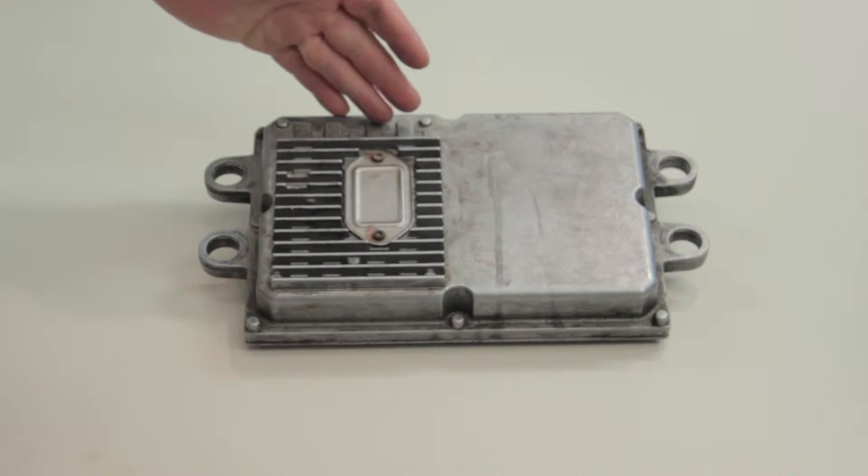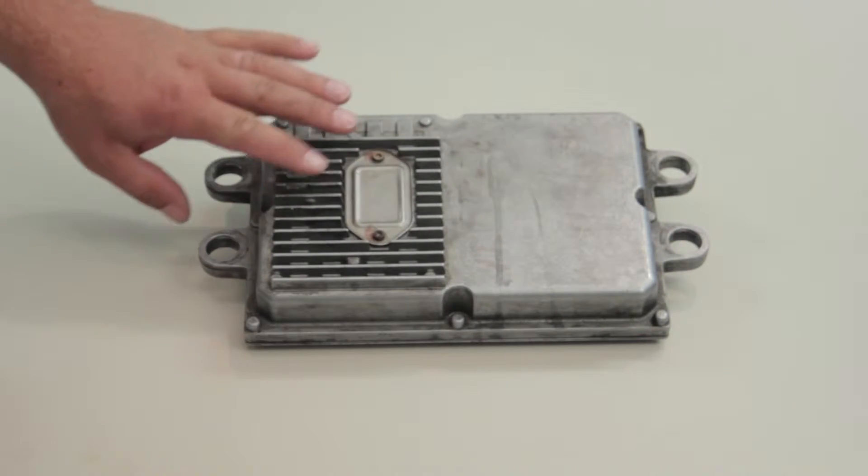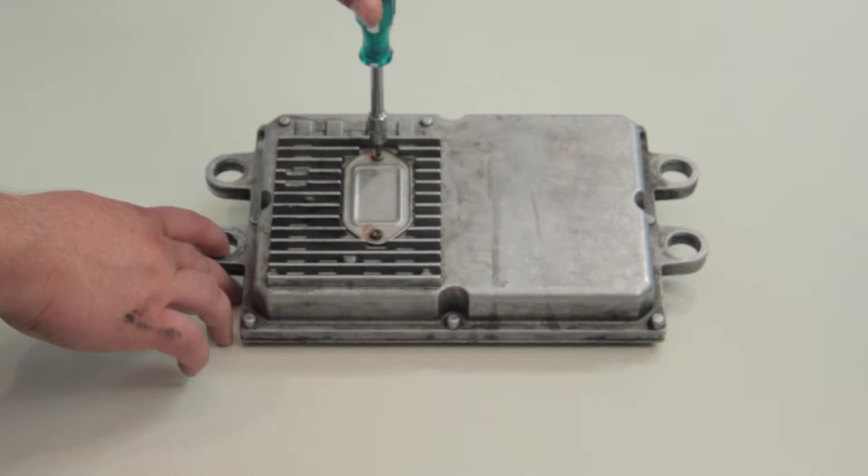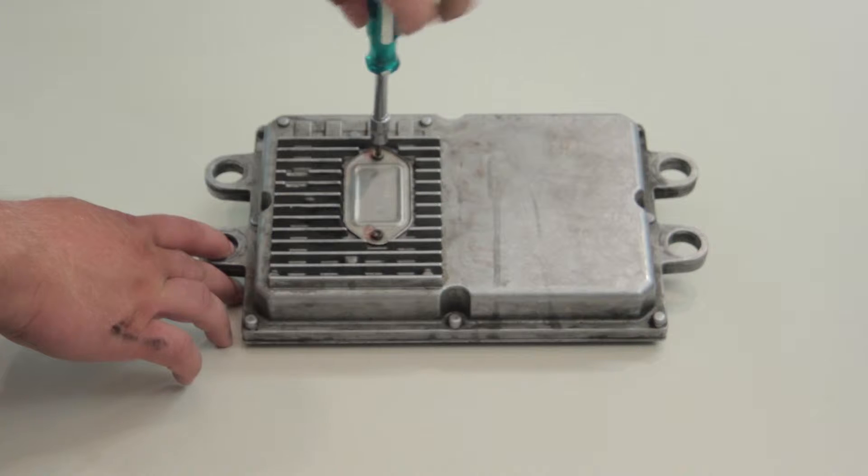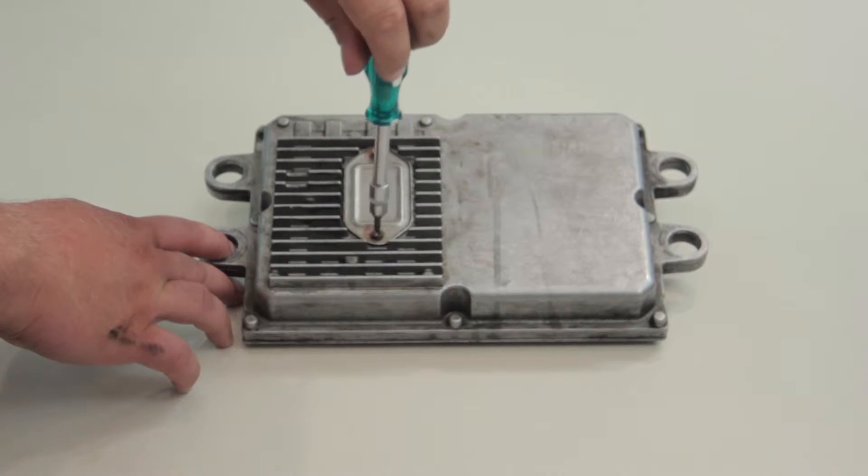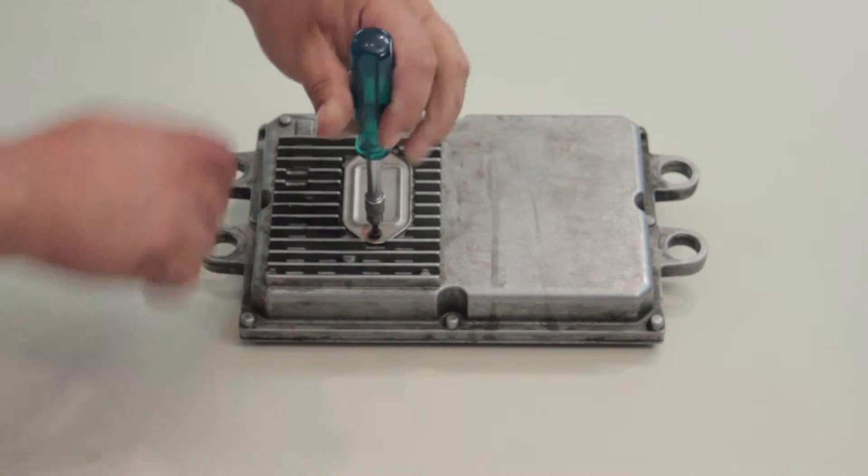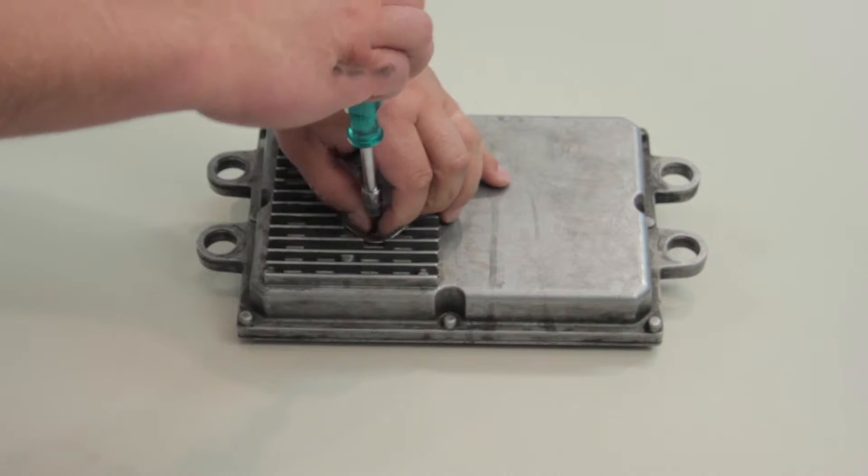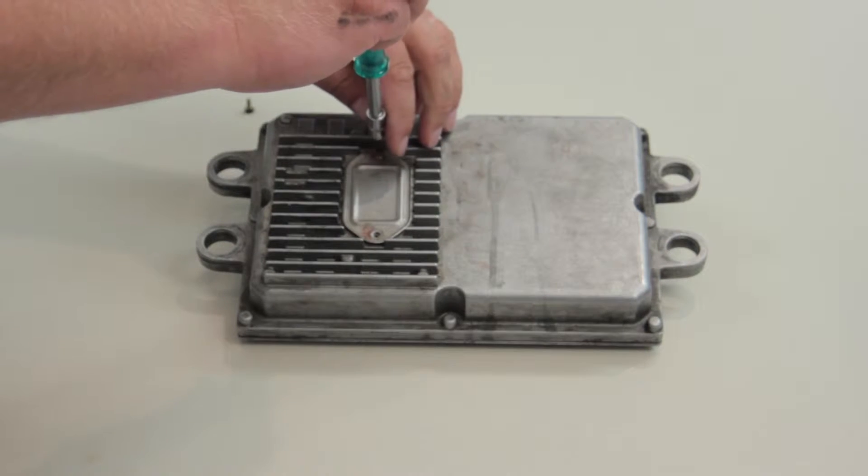Now that we've got the FICM out of the truck one of the first things we're going to do is on the top side here remove this little cover. Now I'm just going to simply remove these two screws using a T20 Torx driver and once we get the screws out we're going to look underneath the cover for a couple more screws.